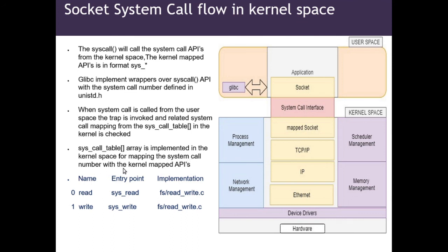The system call table array is implemented in the kernel space for mapping the system call number with the kernel mapped API. Here are some examples of APIs mapped in the kernel — system call read for reading data has number zero, write for writing data to a file or socket has number one. The kernel entry point is sys_read, defined in the kernel source at fs/read_write.c. These APIs are defined in those C files.